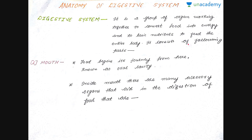The first one is the mouth. You all must be aware of it — the mouth is the only place where the food begins its journey. It is also known as the oral cavity. Inside the mouth, there are many accessory organs, in other words, organs which help the mouth, and various accessory organs that aid in the digestion of food.